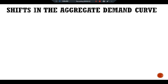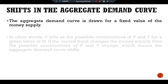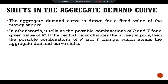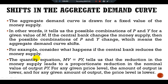Now let's look at shifts in the aggregate demand curve. The aggregate demand curve is drawn for a fixed value of the money supply. It tells us the possible combinations of P and Y for a given value of M. If the central bank changes the money supply, the possible combinations of P and Y change, which means the aggregate demand curve shifts. For example, consider what happens if the central bank reduces the money supply: the quantity equation MV = PY tells us that the reduction in money supply leads to a proportionate reduction in the nominal value of output PY. For any given price level, the amount of output is lower, and for any given amount of output, the price level is lower.